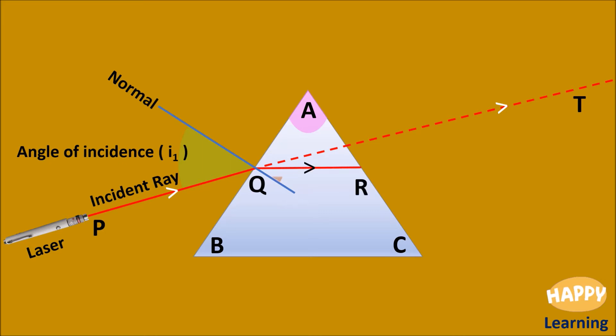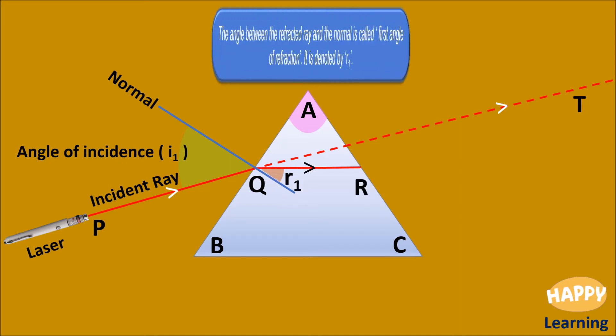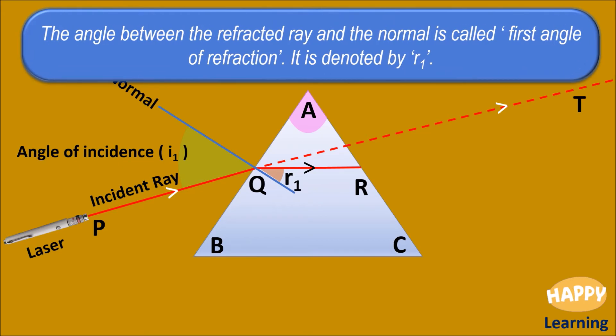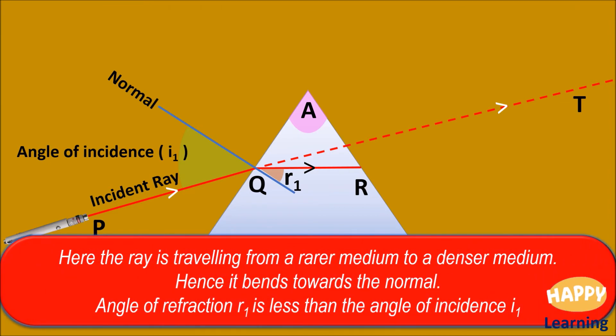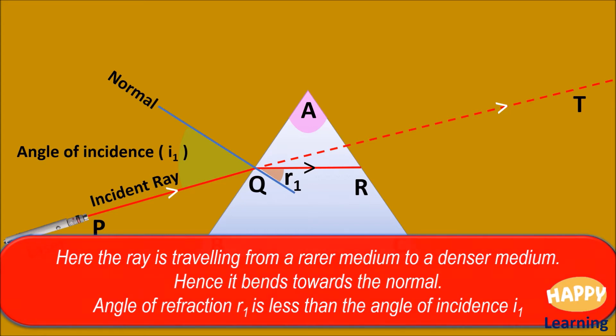This is the refracted ray. The angle between the refracted ray and the normal is called first angle of refraction. It is denoted by R1. Here the ray is travelling from a rarer medium to a denser medium, hence it bends towards the normal. The angle of refraction R1 is less than the angle of incidence I1.